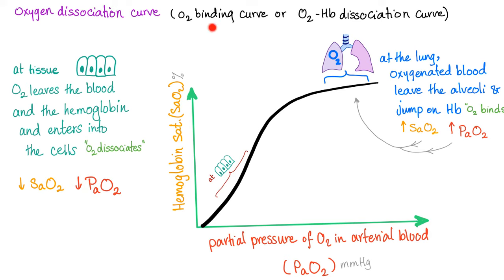The oxygen-hemoglobin dissociation curve — also known as the oxygen binding curve or oxygen hemoglobin binding curve — looks like an S-shape. At the level of the lung, oxygenated blood leaves the alveoli and jumps on the hemoglobin, increasing PaO2 and SaO2. At the level of the tissue, you want to release oxygen quickly to the tissue, so oxygen leaves the blood and hemoglobin and enters the cell. At the lung we talk about oxygen binding; at the tissue, oxygen dissociation. Binding is opposite to dissociation — some call it affinity — and both are opposite to dissociation or unloading. Here is unloading; here is loading.